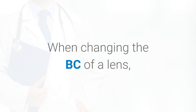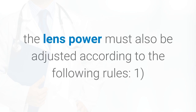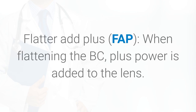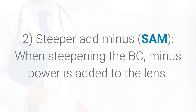When changing the BC of a lens, the lens power must also be adjusted according to the following rules. Rule 1: Flatter ADD plus — FAP — when flattening the BC, plus power is added to the lens. Rule 2: Steeper ADD minus — SAM — when steepening the BC, minus power is added to the lens.